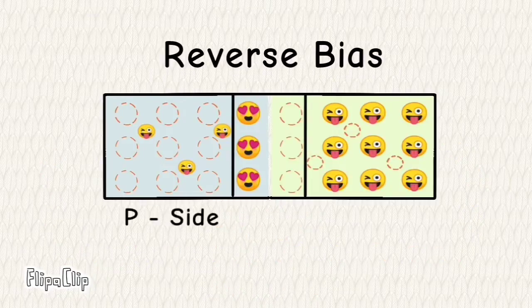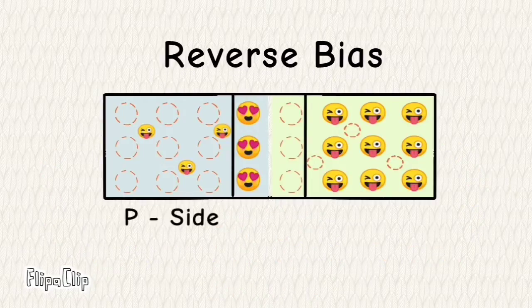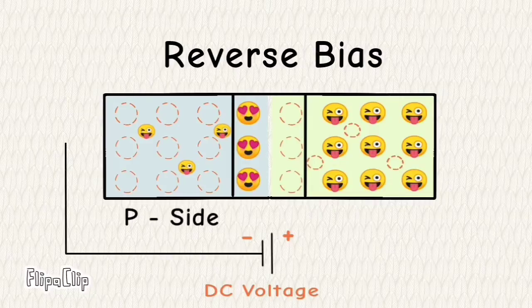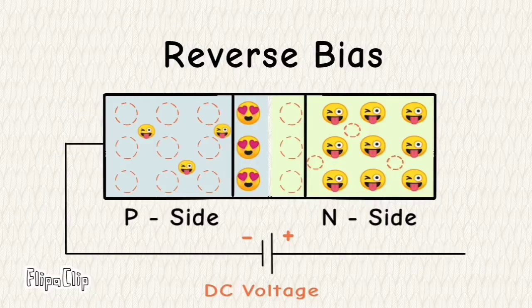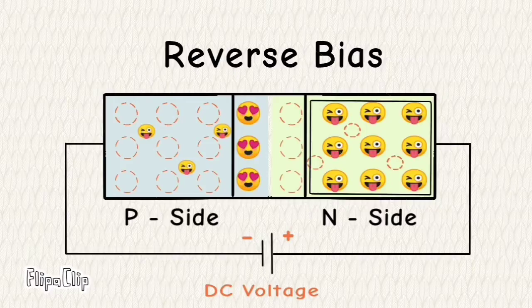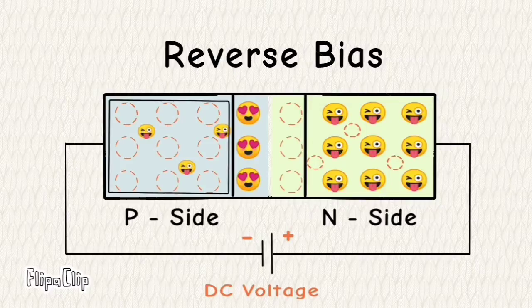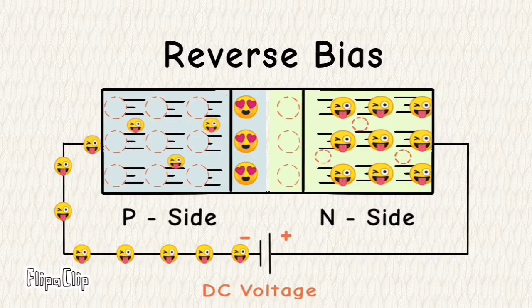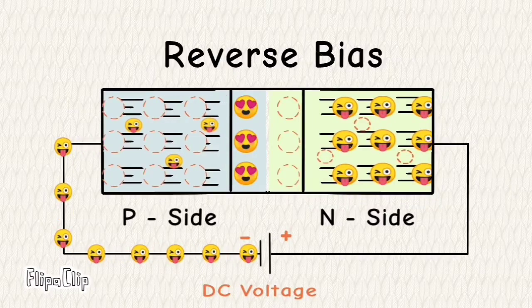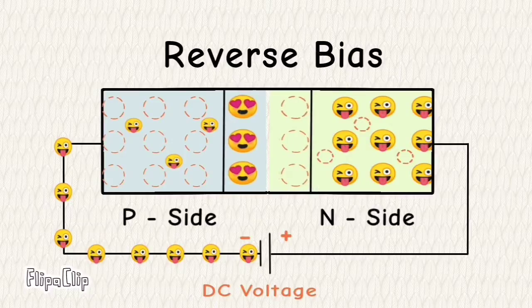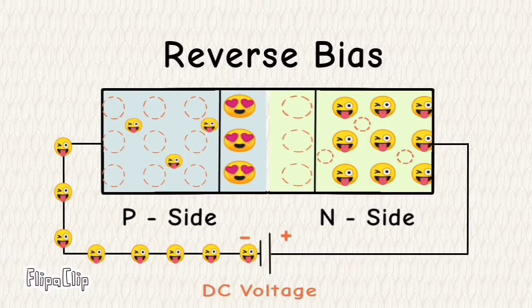Jabki reverse bias mein diode ke p-side ko DC voltage ki negative terminal ke saath aur n-side ko positive terminal se jodne ke karan, free electrons aur holes opposite direction mein chale jate hain, aur jo depletion layer hai woh aur expand hoti jati hai.